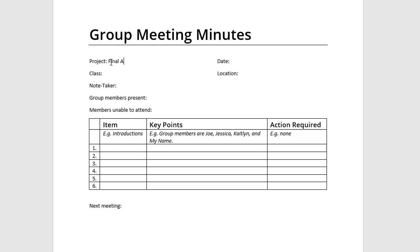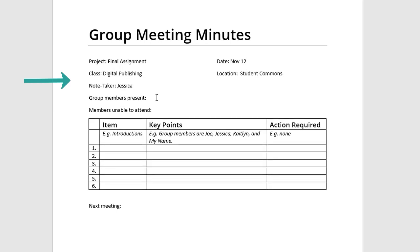Fill in the details about the meeting here at the top. This helps you know what meeting it is if you're looking at your documents later on. Write down the names of all the members who are at the meeting and the members who weren't able to make it.